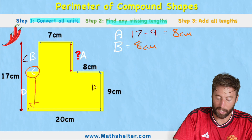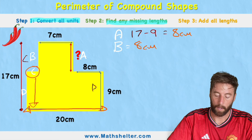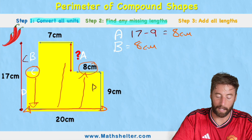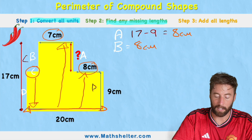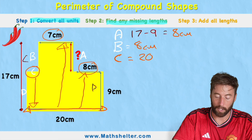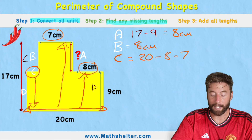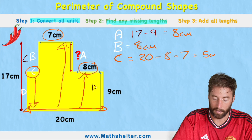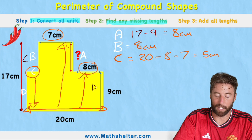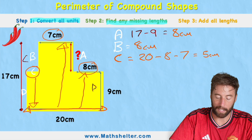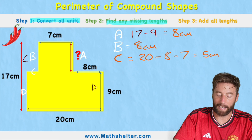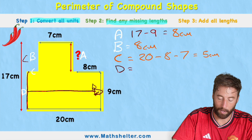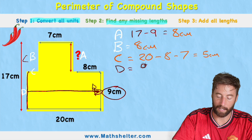For C, we look at the opposite total length of 20 centimeters. Part of that opposite side accounts for 8 centimeters and another part is 7 centimeters. So C equals 20 subtract 8 subtract 7, which is 20 − 8 = 12, then 12 − 7 = 5 centimeters. Finally D — looking opposite, we're given the entire measurement of 9 centimeters, so D equals 9 centimeters.